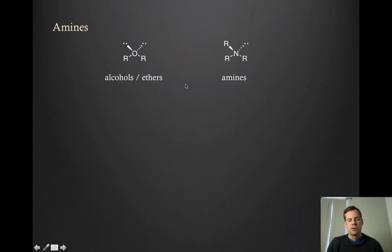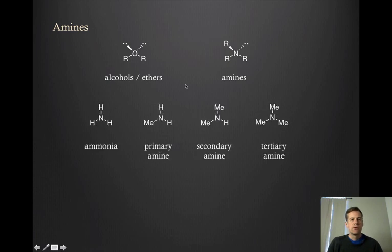We don't deal with nomenclature too much in this course, but there is just one bit that we have to talk about here. Amines are categorized based on how many substituents are on the nitrogen, so how many non-hydrogen substituents. The simplest amine is ammonia, with three hydrogens. If you put on a single group onto the nitrogen, that's called a primary amine. If you have two, it's a secondary amine, and then three is a tertiary amine.